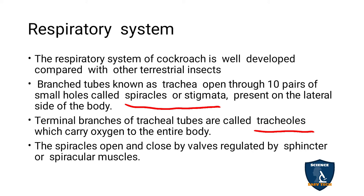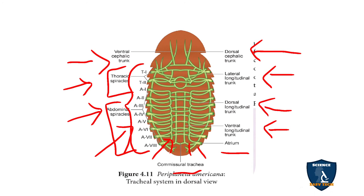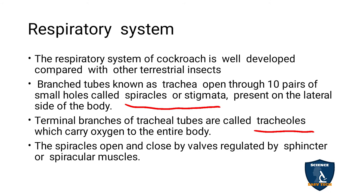The spiracles open and close by valves, regulated by the sphincter or spiracle muscles. So oxygen has to diffuse through these spiracles only. When oxygen enters through diffusion, the valves in the spiracle help in the opening and closing process, regulated by the sphincter or spiracle muscles.